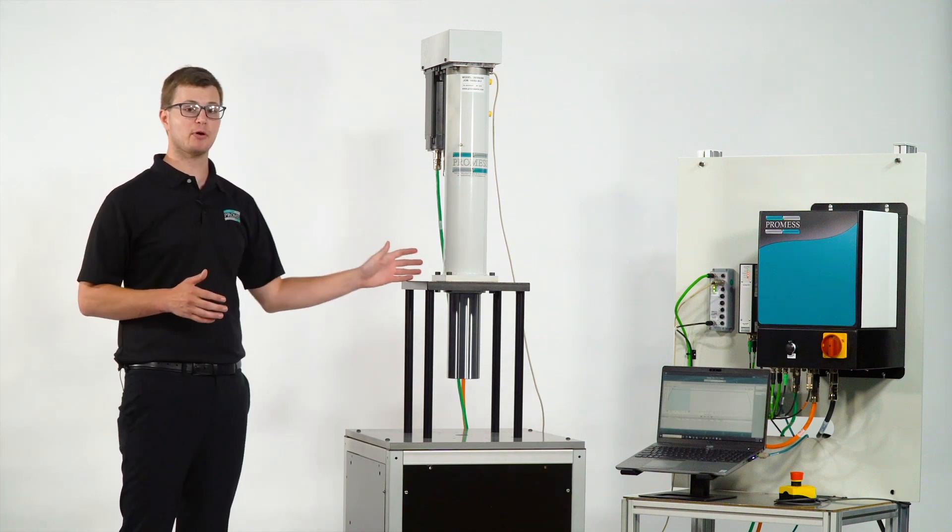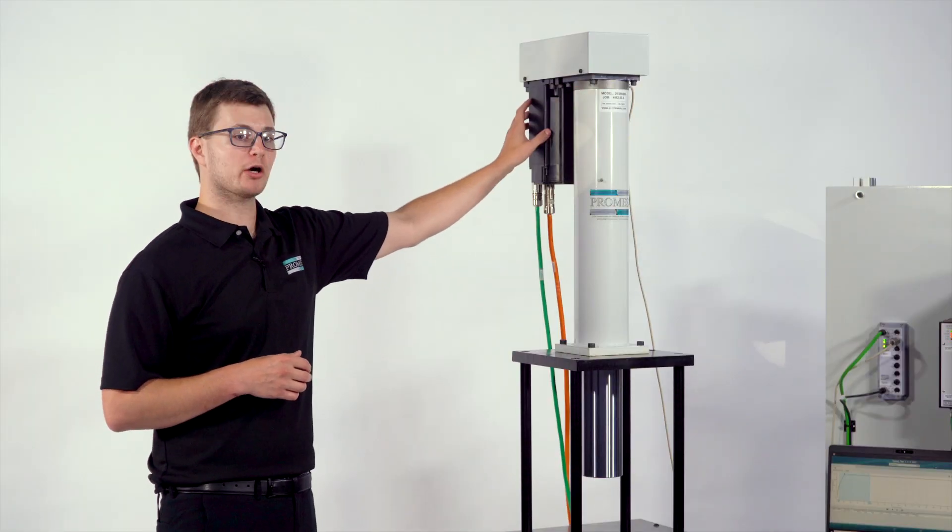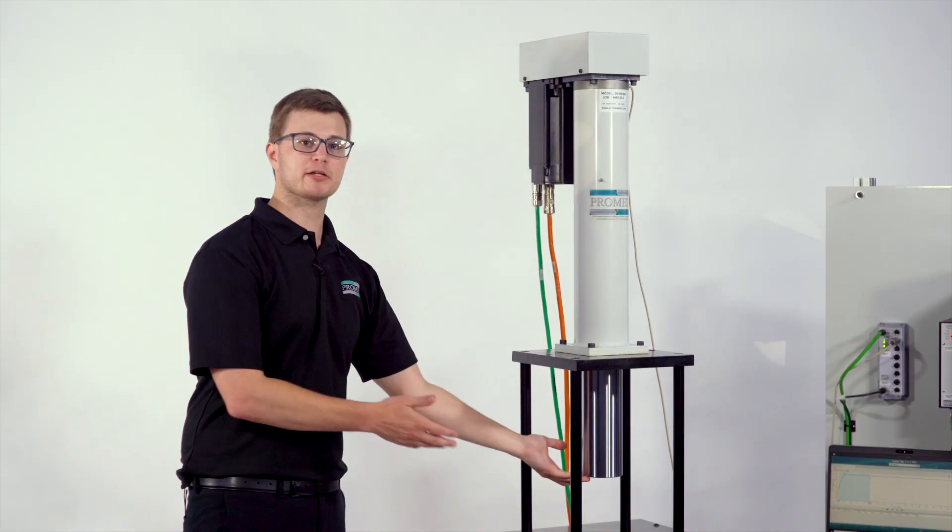The EMAP is a servo motor driven actuator with a built-in load cell, motor, and ball screw fed press ram.